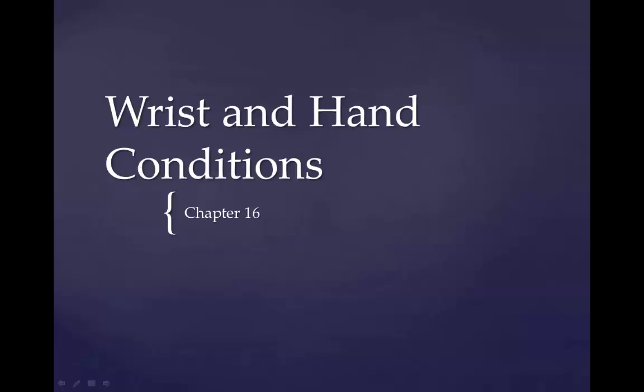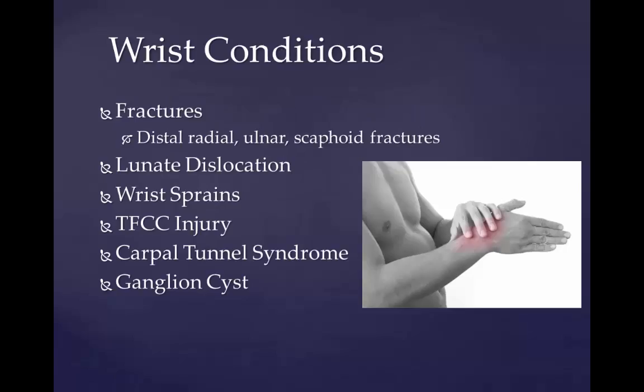Wrist and Hand Conditions, Chapter 16. Wrist conditions to be discussed within this lecture include fractures, which include the distal radial, ulnar, and scaphoid fractures, lunate dislocation, wrist sprains, TFCC injury, carpal tunnel syndrome, and ganglion cysts.